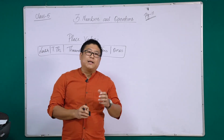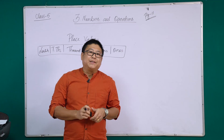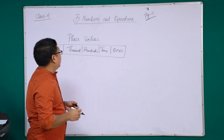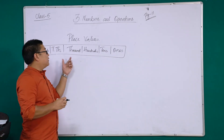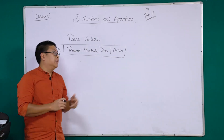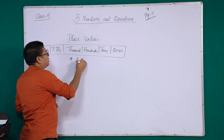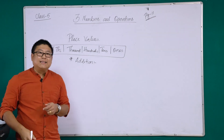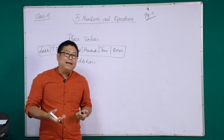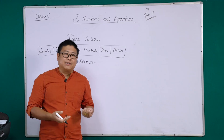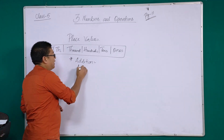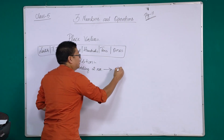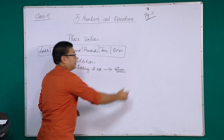Numbers and operations are nothing but simple additions, subtractions, multiplications and divisions. So let's look at additions first. Addition is simply adding two numbers and finding a sum. The end result is called the sum.